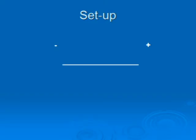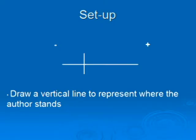After you have written down the main idea, draw a horizontal line with a negative sign to the left and a positive sign to your right. These represent the positive and negative sides. The next step is to draw a vertical line to represent where the author stands.